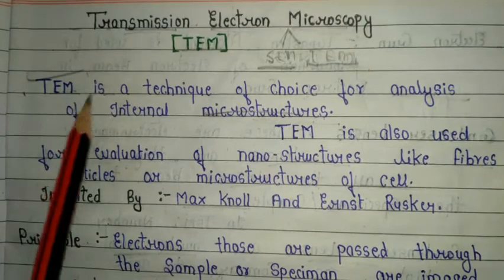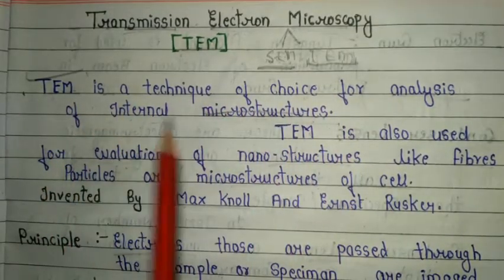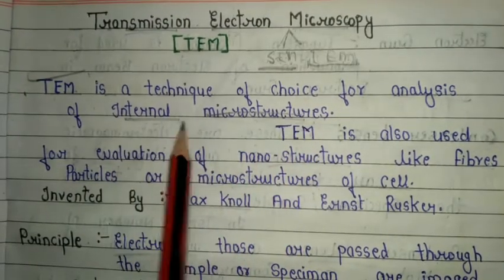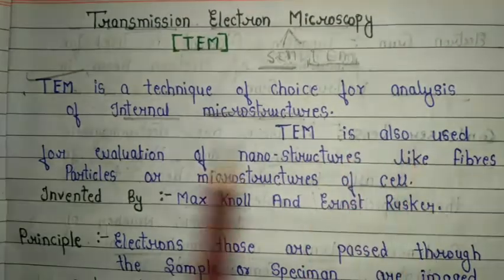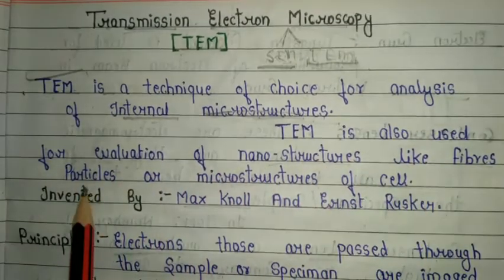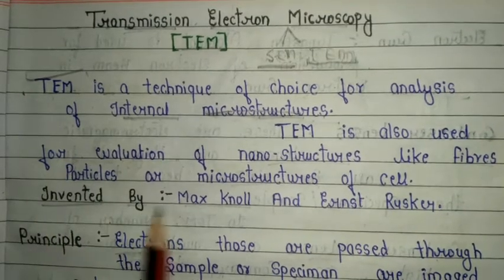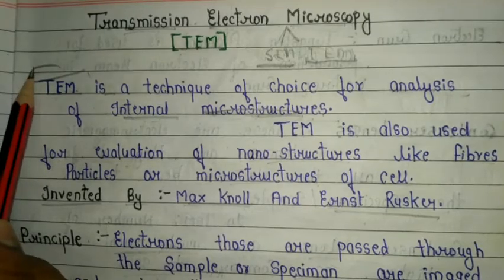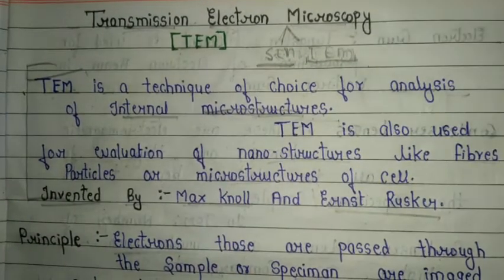The basic introduction: TEM is a technique of choice for analysis of internal microstructure. TEM is also used for evaluation of nanostructures like fibers, particles, or microstructures of cells. It was invented by Max Knoll and Ernst Ruska. This is the basic introduction of transmission electron microscopy.